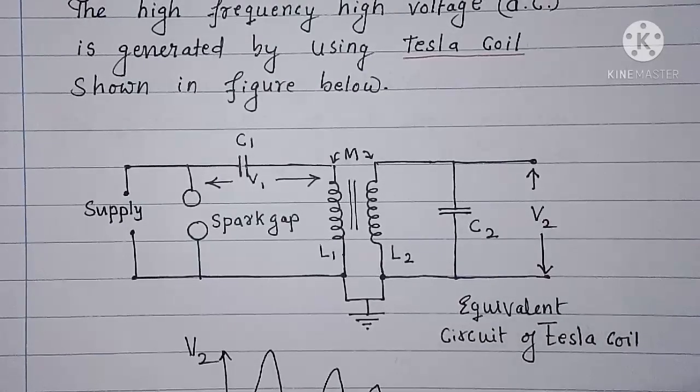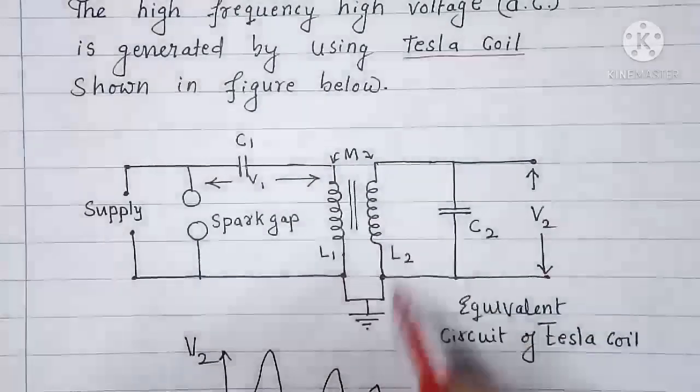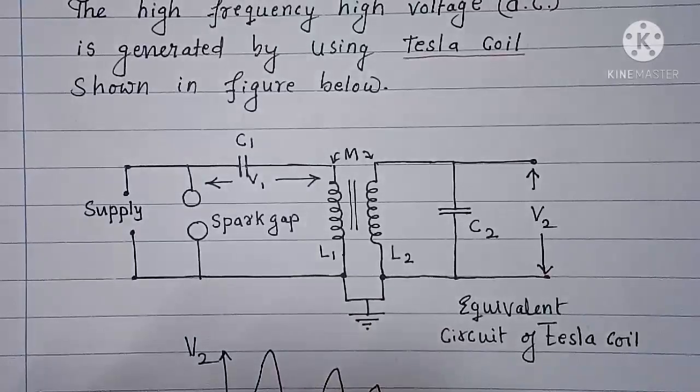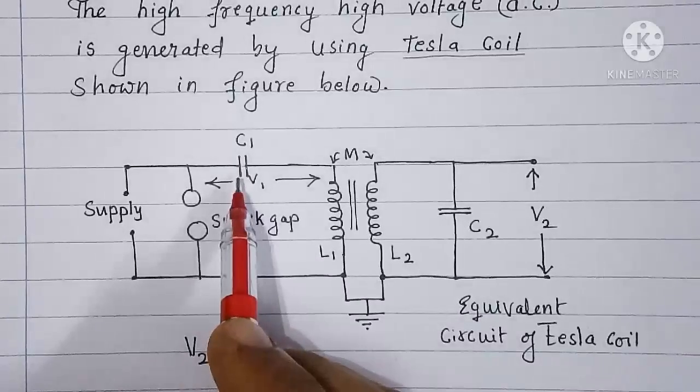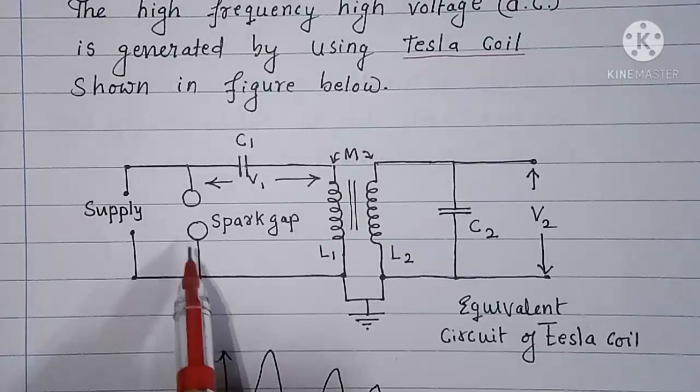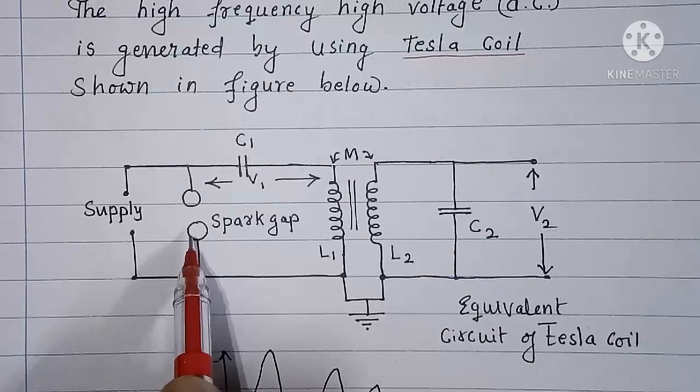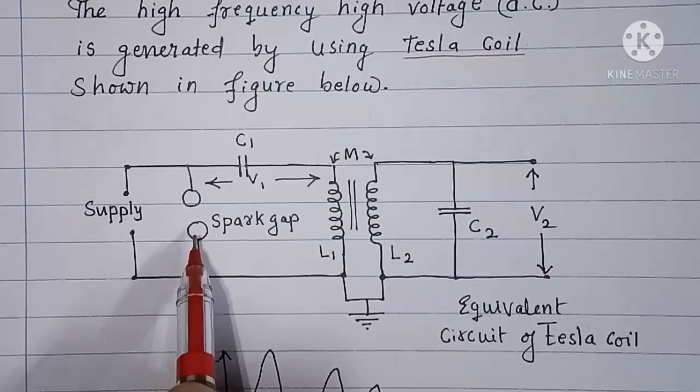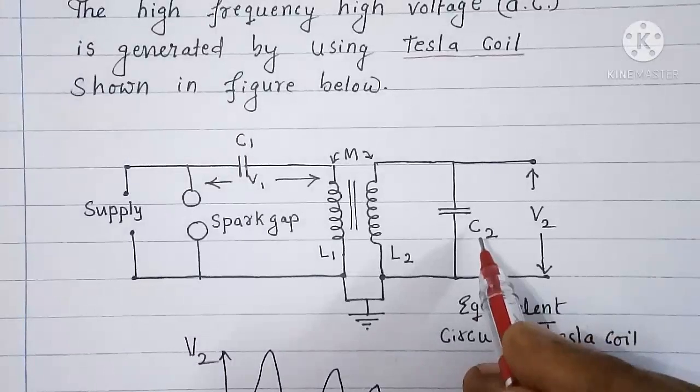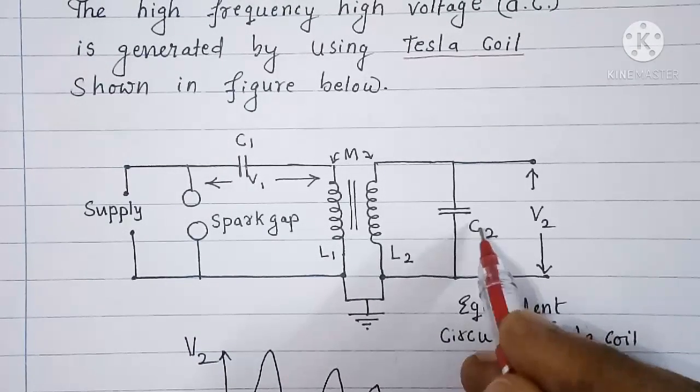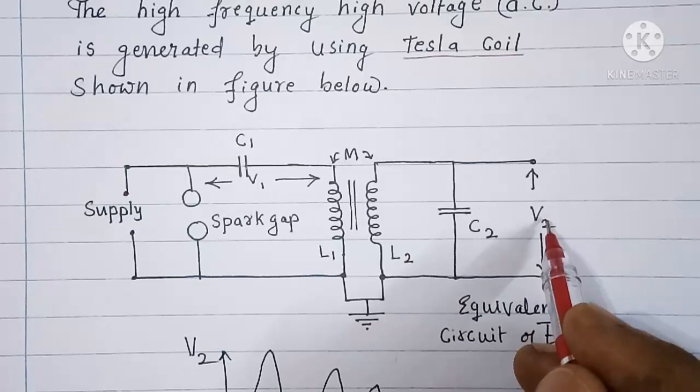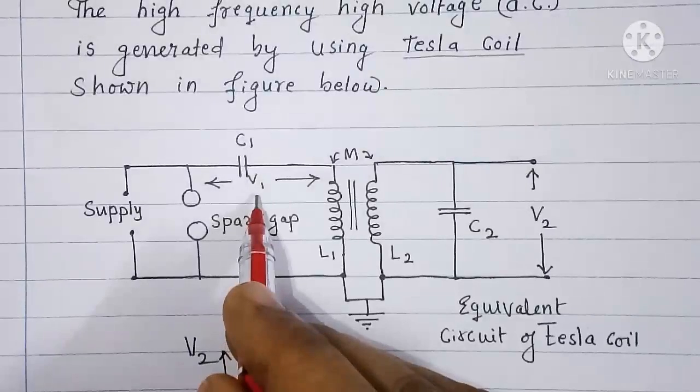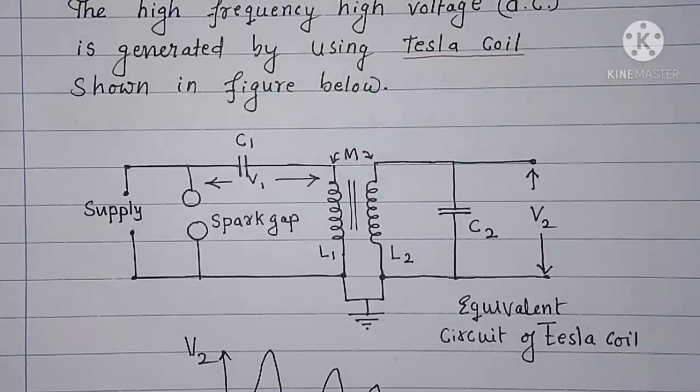Here in the Tesla coil what you see is an air core high voltage high frequency transformer, capacitors C1, a sphere gap whose spheres are made up of metal. The gap between the two spheres here can be adjusted according to our requirement. C2 is the capacitive load across which voltage V2 appears. V1 is the voltage across capacitor C1. Now let us know how it works.